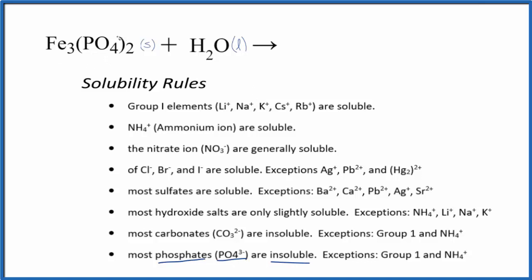So the phosphate ion has a 3 minus ionic charge, each one of these. That means we have to have a 2 plus ionic charge for everything to balance out. So we'll have three of these iron 2 ions, and then we'll have two of our phosphate ions here.